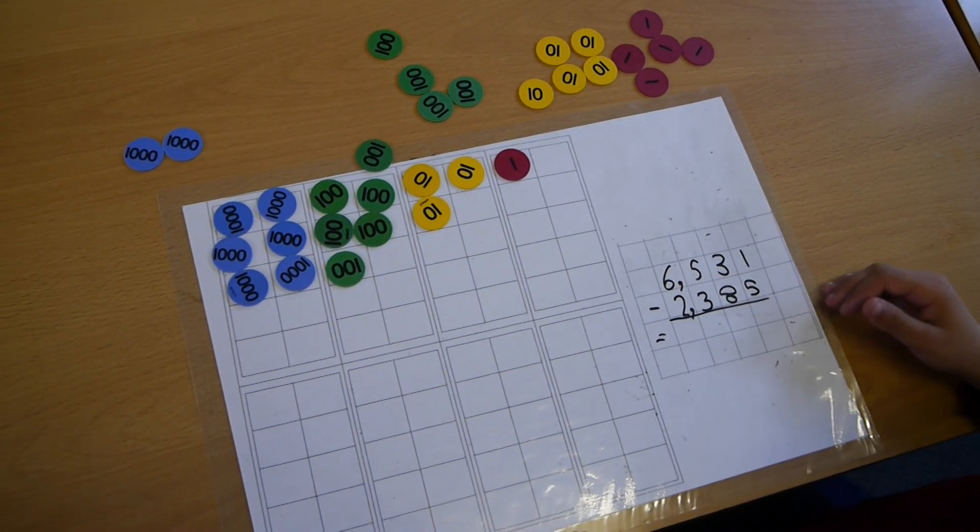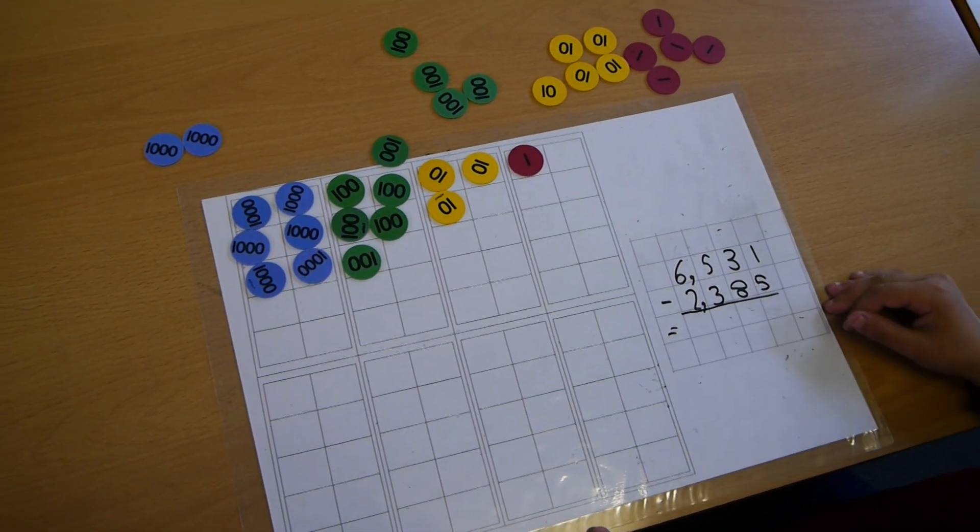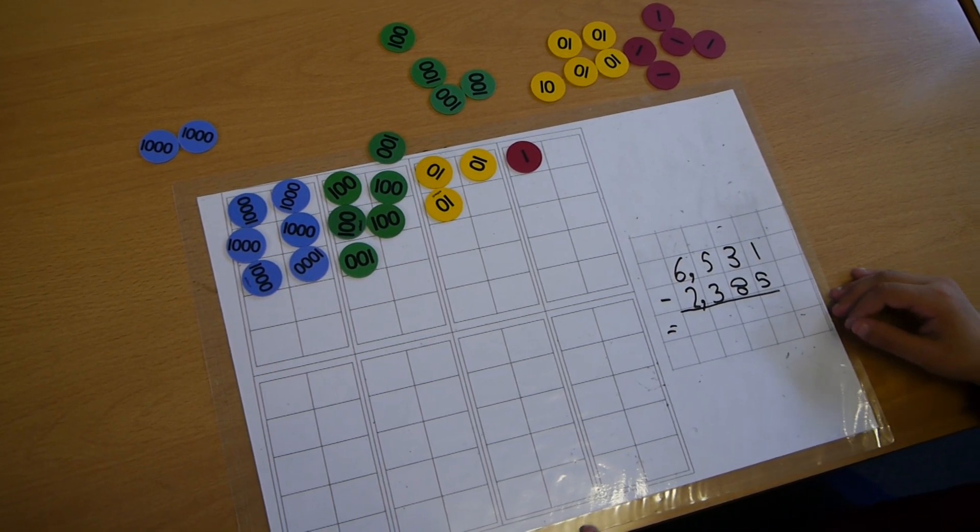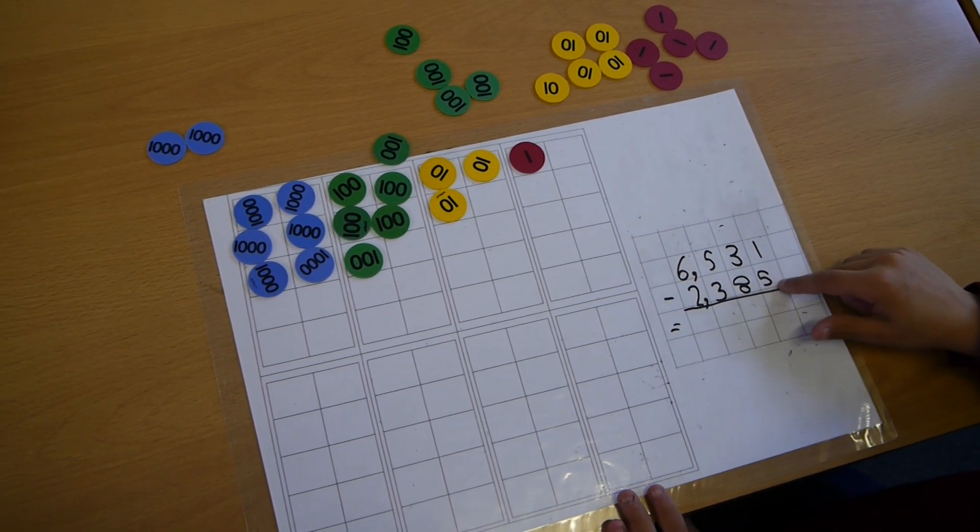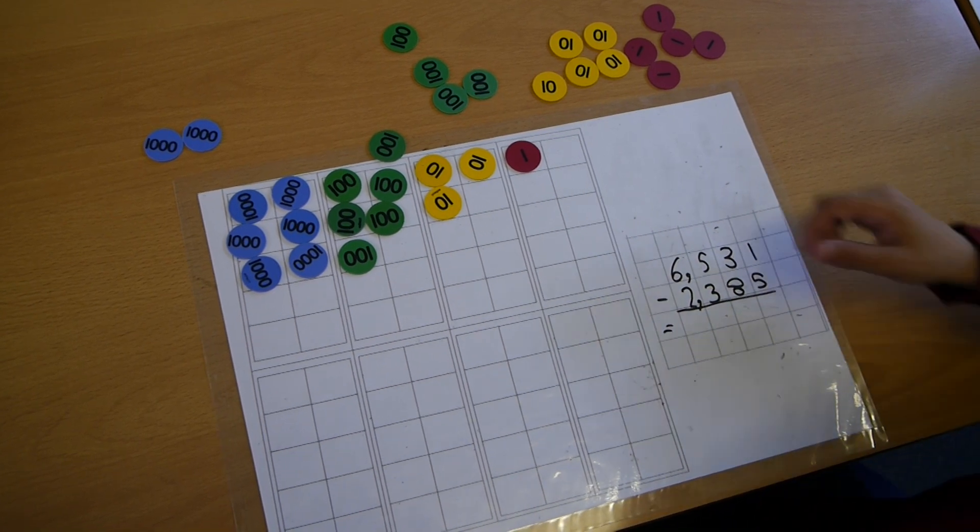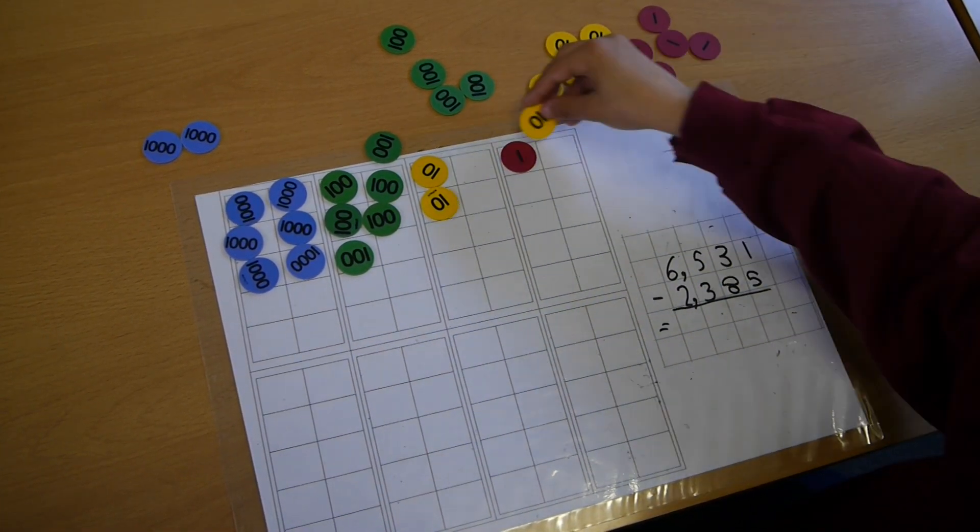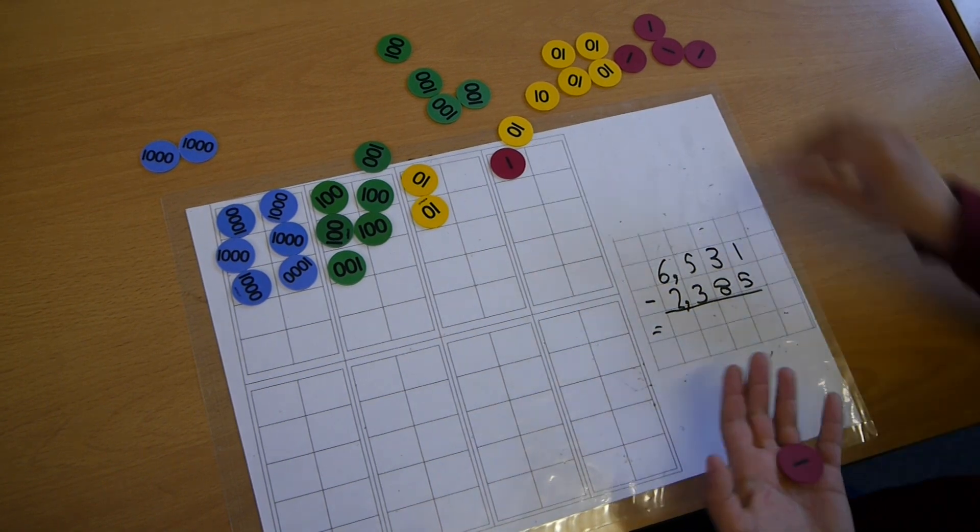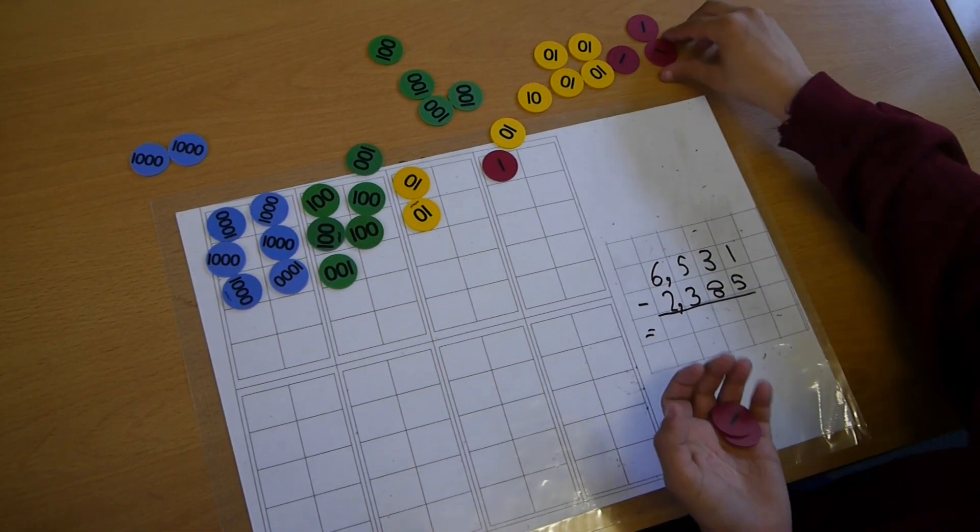Now I need to subtract 2385 but we've got a problem straight away with 5 and 1. So we need to rename with take away 10 and add 10 units.